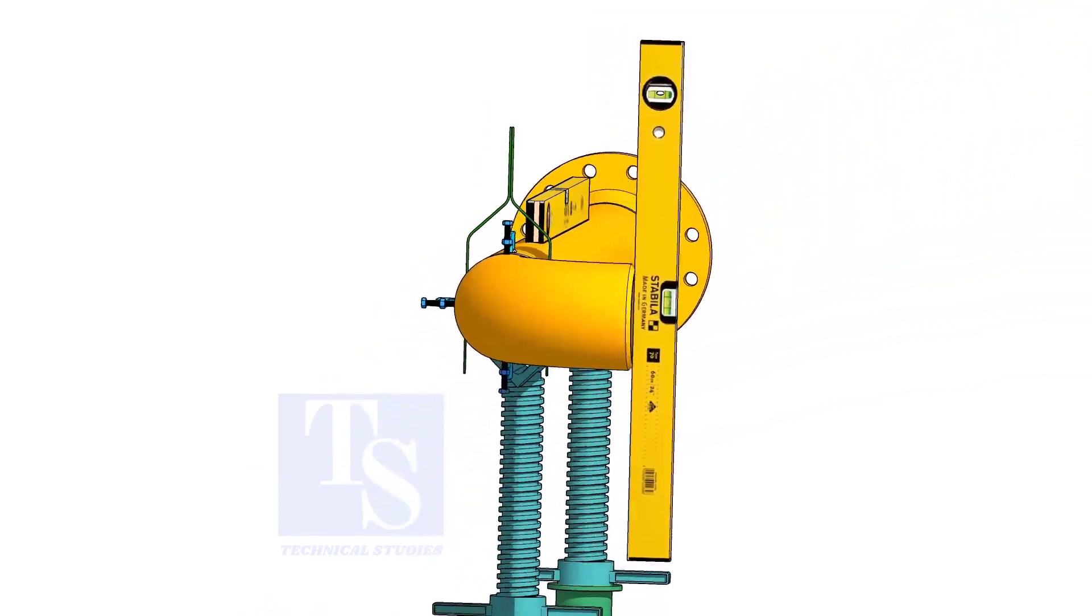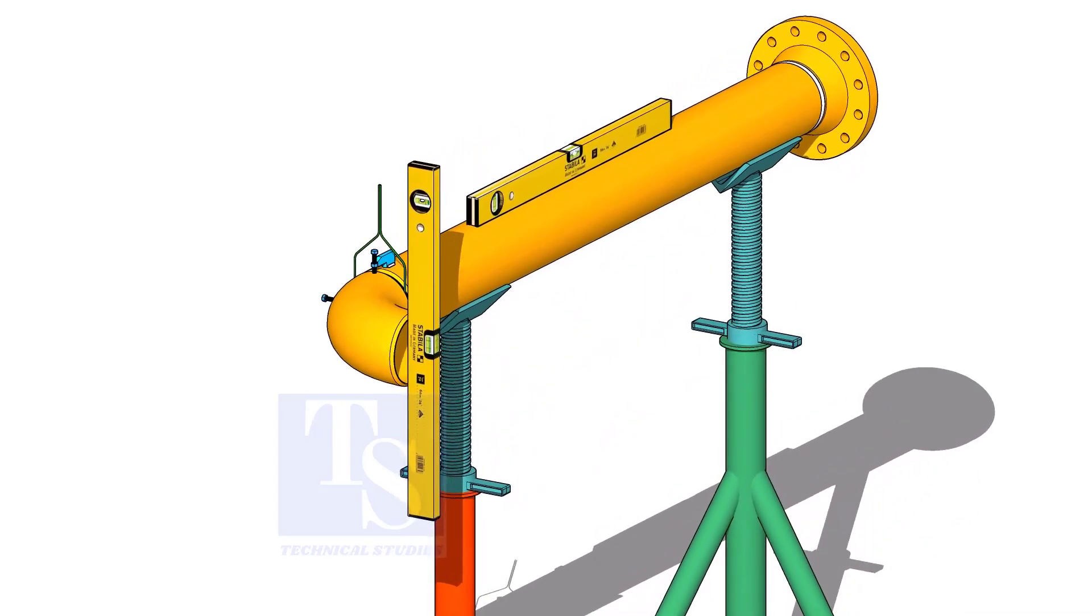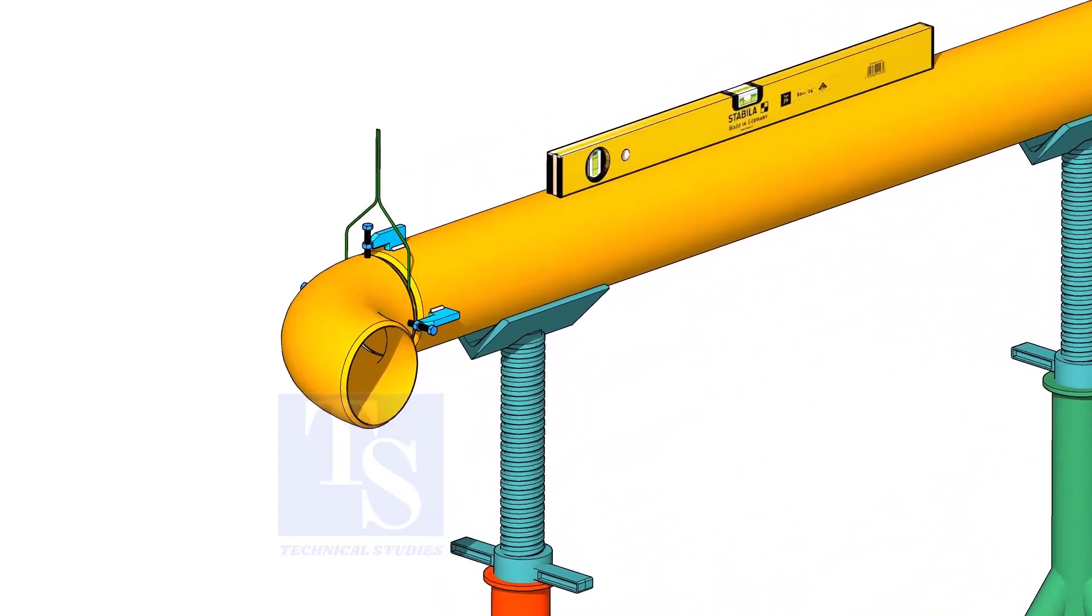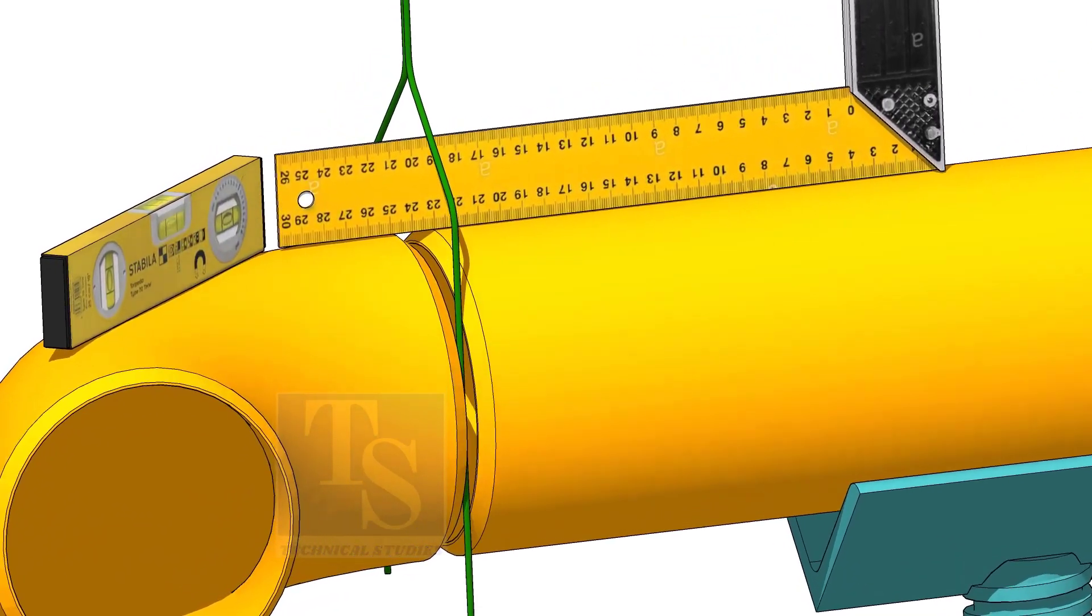Check the level of the elbow face. You can use either a level bottle or a plumb bob. Correct the overlap.